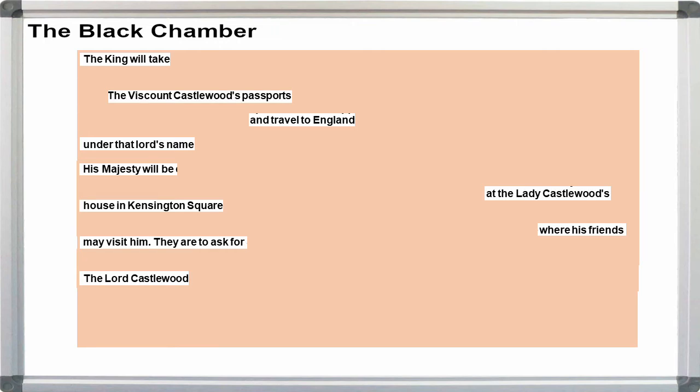Somehow, Lady Castlewood receives the grill, which looks something like this. Placing the grill over the letter, we get the secret message.